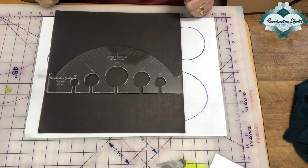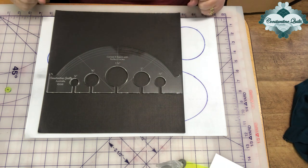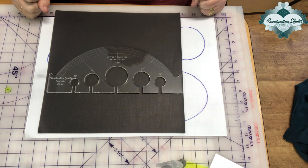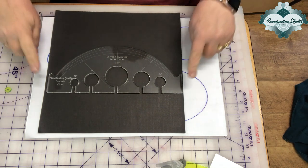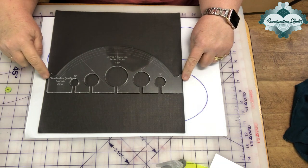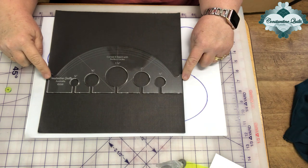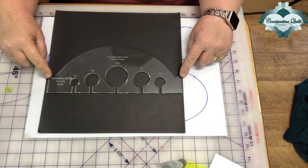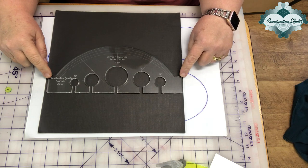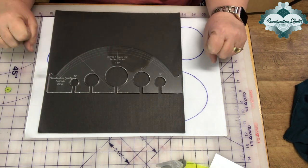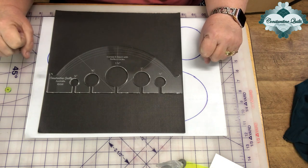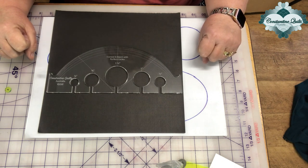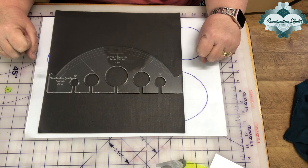Introducing the Curve Crosshatch with Perfect Circles Ruler from Constantine Quilts here in Australia. These have been designed and made here in Australia. This ruler has been out of stock for quite a while in my no frills range and this is the new version updated with beautiful etched guidelines to assist you with quilting designs on your quilt tops.